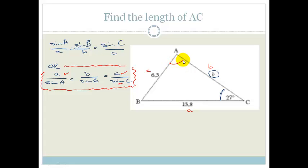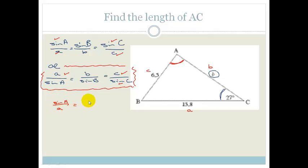So I'm actually going to work out angle A first. Even though I said we should use the second form, I've now realized we need to find an angle first so we can find B. I'm going to use sine A over A equals sine C over C. If I get this angle, then by the sum of angles in a triangle I can get angle B, and then using the sine rule I can get side B.